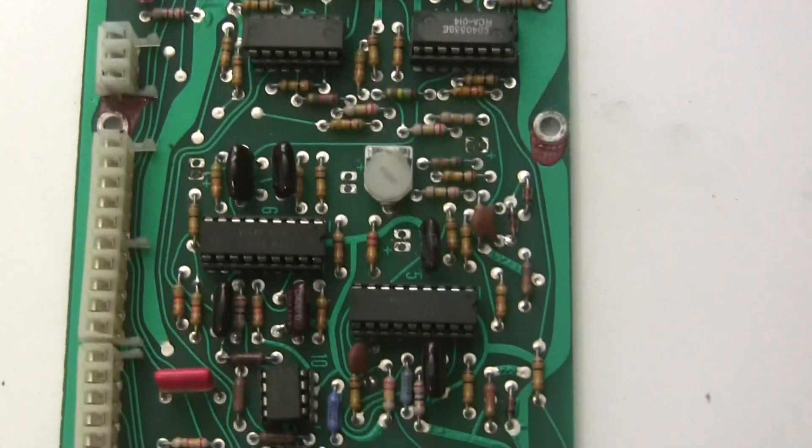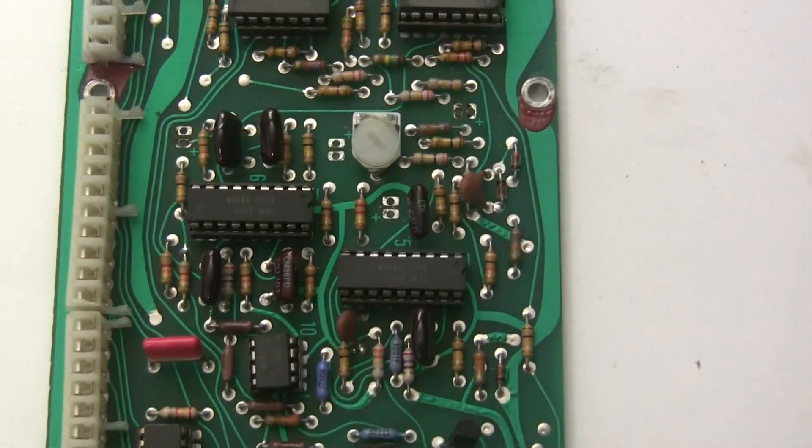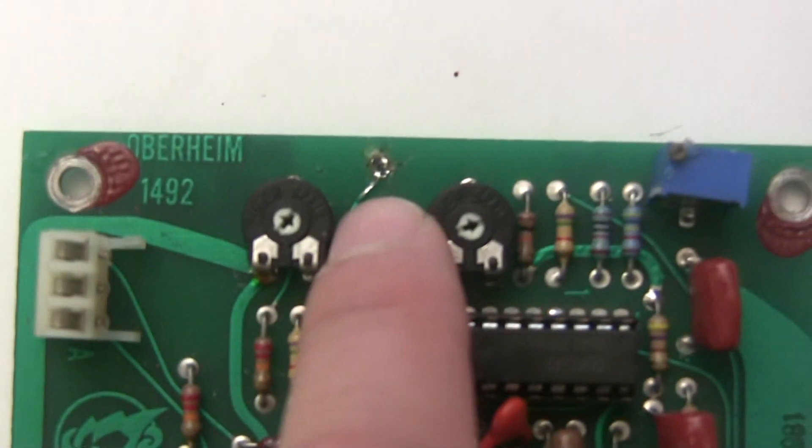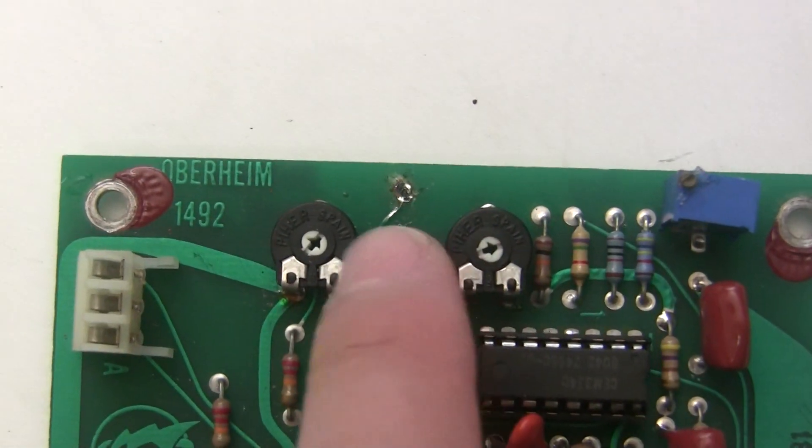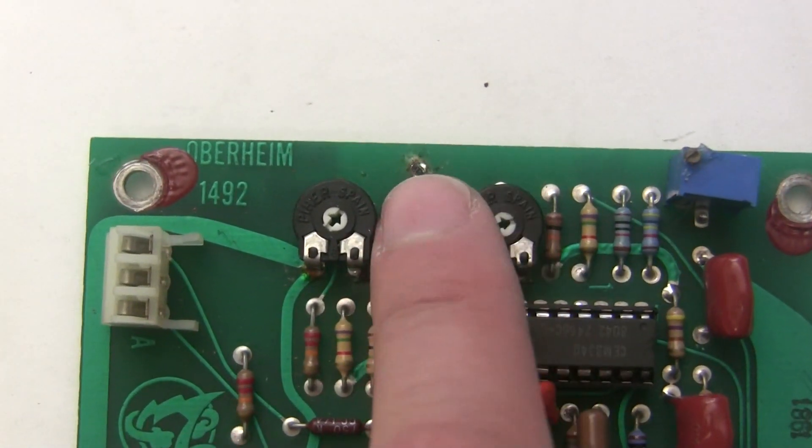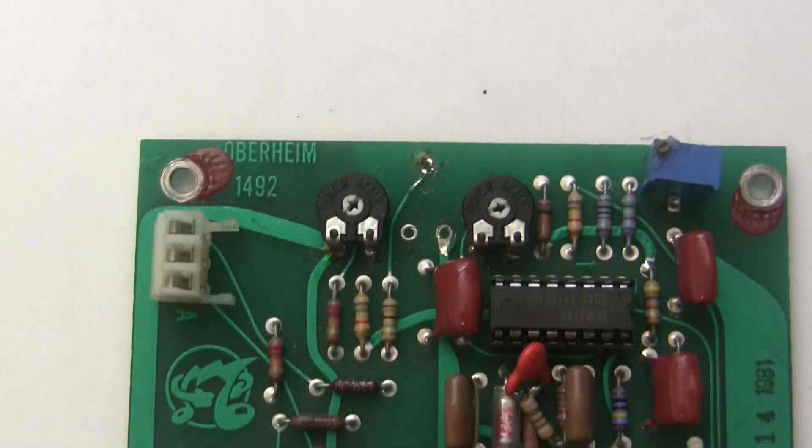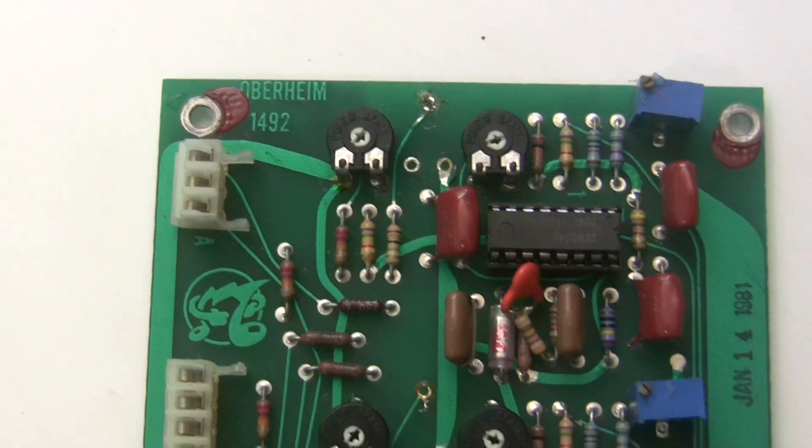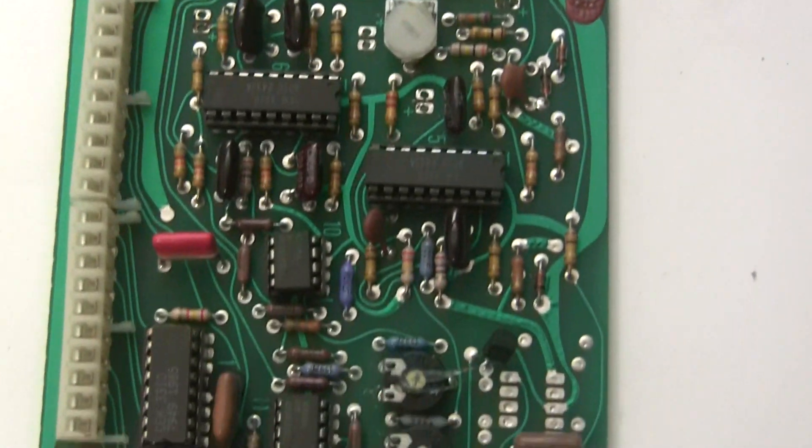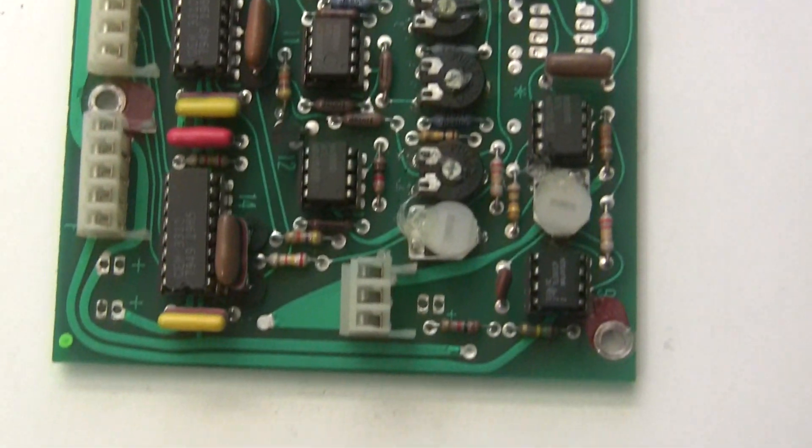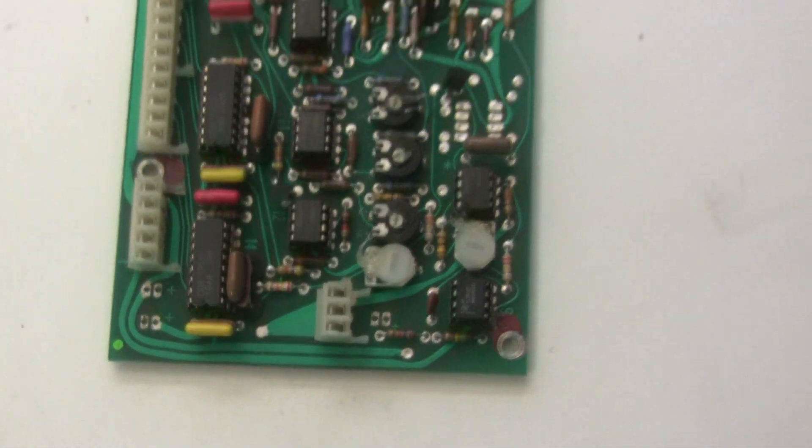Also since someone had worked on this, there's always a possibility of bad soldering. And I did see one lifted trace here where they put this initial frequency trimmer in. It's not the end of the world. I mean we can definitely get the new trimmer in there, it's not a problem.